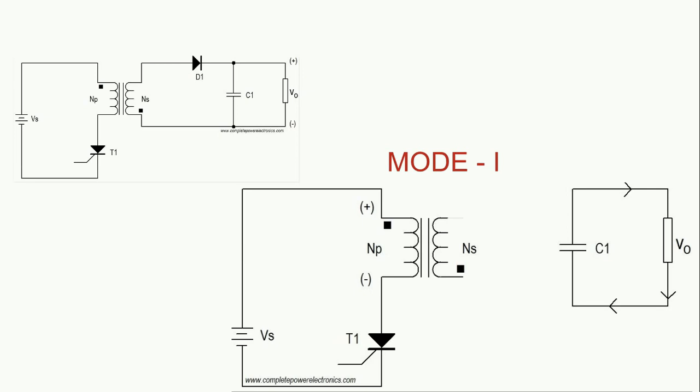As the switch is in on condition, it forms the closed path on the primary side, so energy is kept on getting charged in the primary coil. During this time, the charge already stored in the capacitor C will discharge to the load.